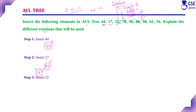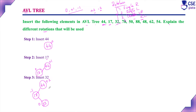Insert the third element, 32. Compare with root 44: 32 is lesser, so it goes left. But 17 is already the left child, so compare with 17: 32 is greater than 17, so it is inserted as the right child of 17. After insertion, check balance factors: for 32 it is 0; for 17 it is 0 minus 1 = -1; for root 44, number of left children is 2 and right children is 0, giving a balance factor of +2. The tree is now unbalanced — we must perform a rotation.